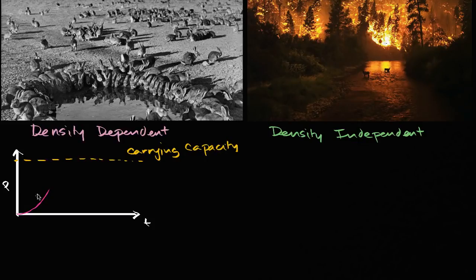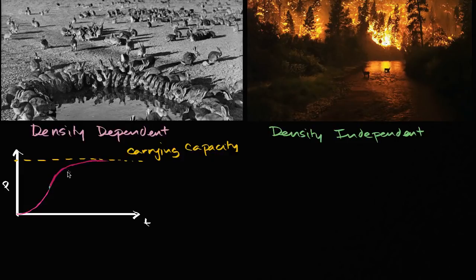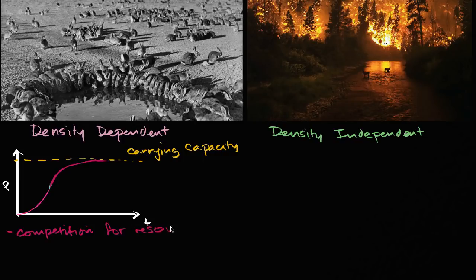As the density of rabbits in a certain area gets higher and higher, the density dependent limiting factors start to play. What could be some of these density dependent limiting factors that keep the population from going dramatically above the carrying capacity? Well, the most obvious one could be competition for resources — and the one that might come to mind most clearly is food resources.